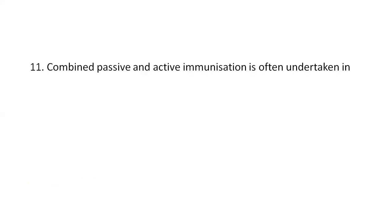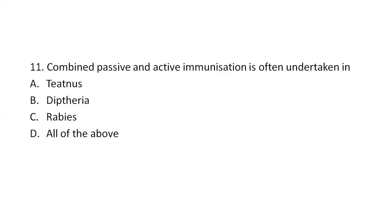Next question: Combined passive and active immunization is often undertaken in Option A, tetanus; Option B, diphtheria; Option C, rabies; Option D, all of the above. The right answer is Option D, all of the above. In diphtheria, tetanus, and rabies, passive immunoprophylaxis with immunoglobulins is given alongside active immunization with inactivated vaccines. Passive immunization gives immediate but short-lasting protection (2 to 3 weeks), while active immunization slowly develops immunity. Both injections are administered at the same time at separate sites.